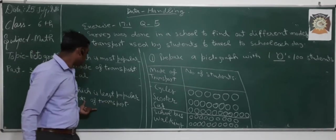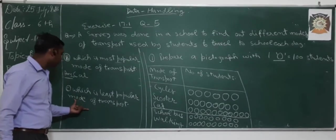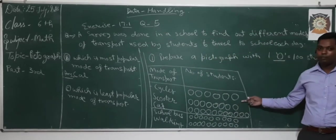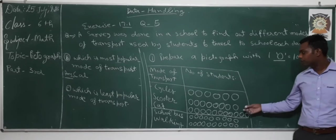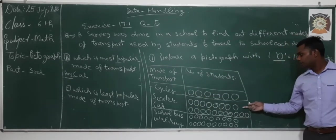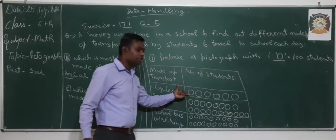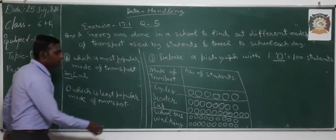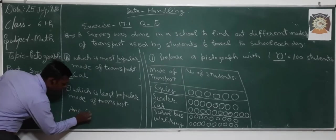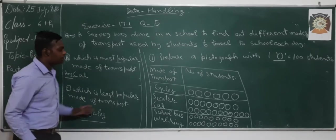Part C asks: which is the least popular mode of transport? We look at which has the lesser number of circles. Cycling has 6 circles, while scooters has 8, car has 11, walking has 10, and school bus has 9. So cycling is the least popular mode of transport. The pictograph helps us find the answer easily.